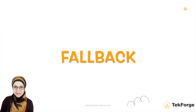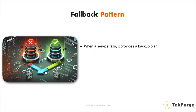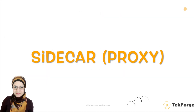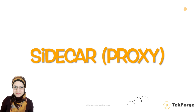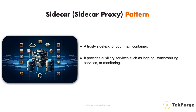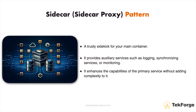Fallback: when a service fails, the fallback pattern provides a backup plan. It offers an alternative response or action to ensure your application continues running smoothly even when some services hiccup. Sidecar or Sidecar Proxy: this pattern is like having a trusty sidekick for your main container. The sidecar provides auxiliary services such as logging, synchronizing services, or monitoring, enhancing the capabilities of the primary service without adding complexity to it.